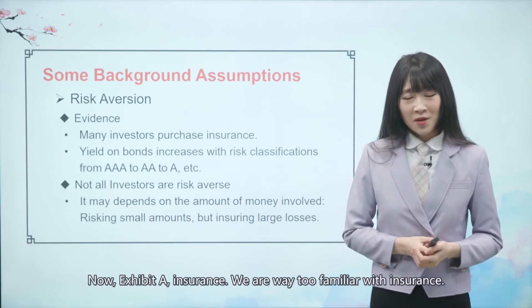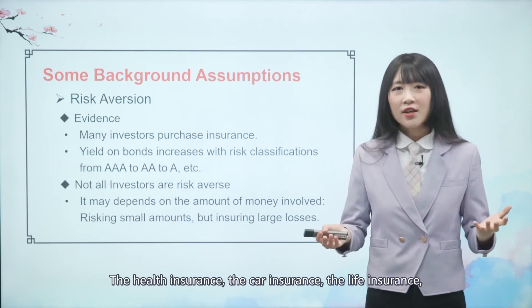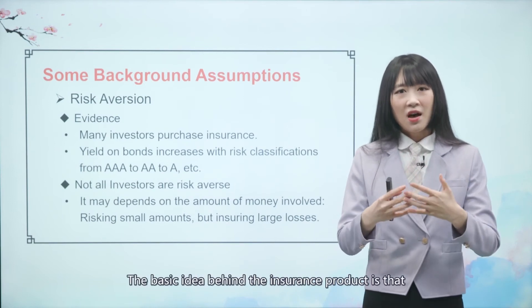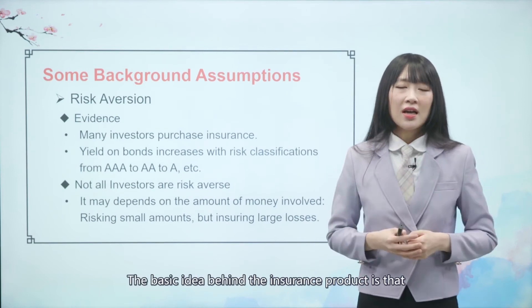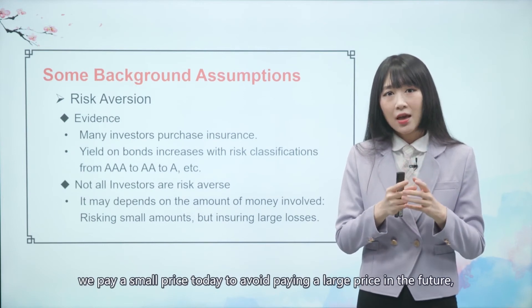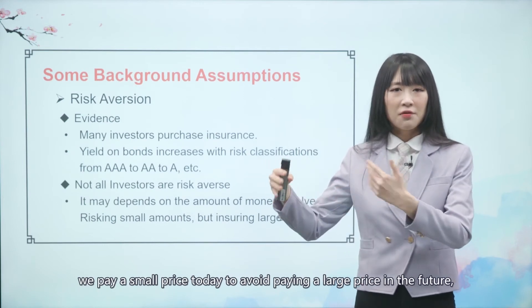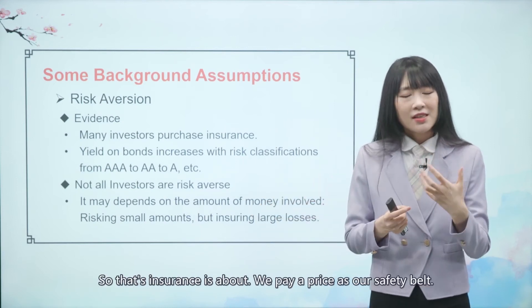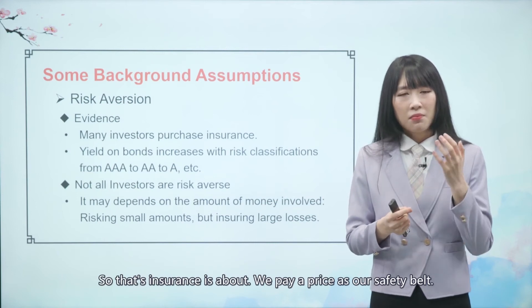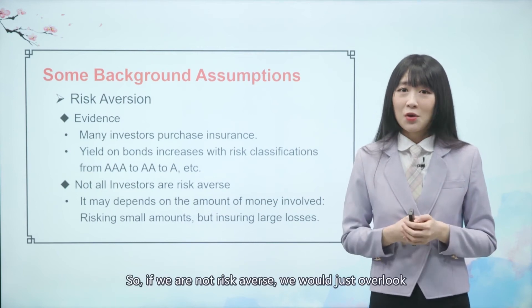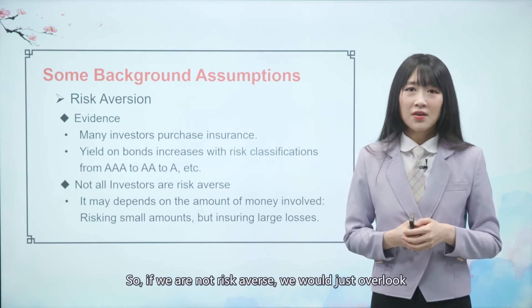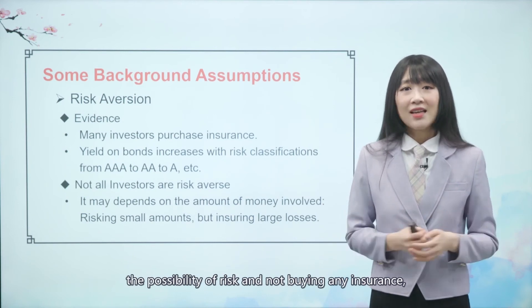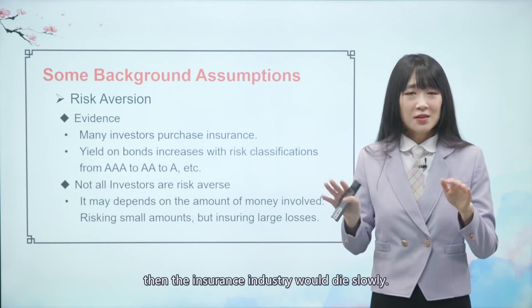We are all very familiar with insurance — health insurance, car insurance, life insurance. The basic idea behind insurance products is that we pay a small price today to avoid paying a large price in the future, or to avoid losing a lot of money. We pay a price as our safety bill. If we were not risk averse, we would just overlook the possibility of risk and not buy any insurance — and the insurance industry would die slowly.